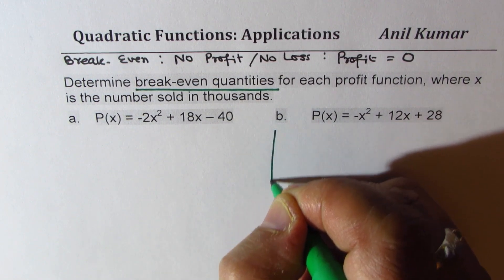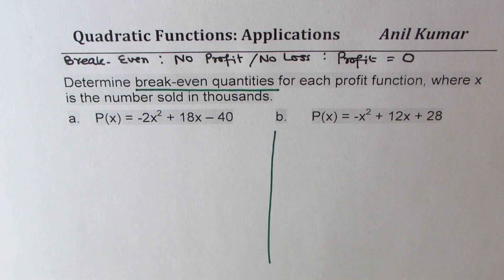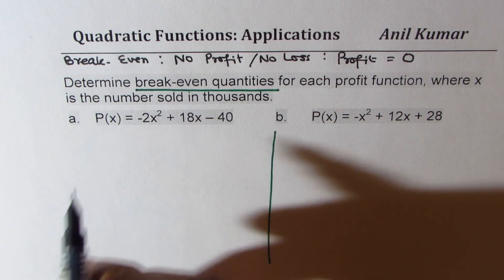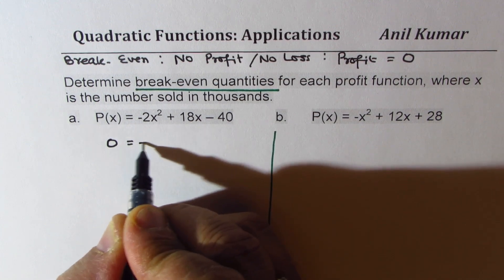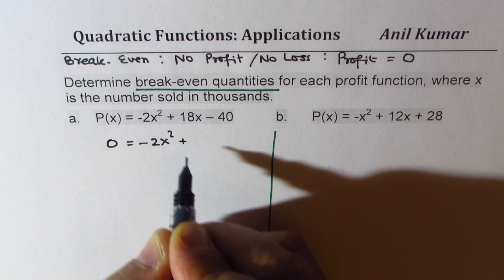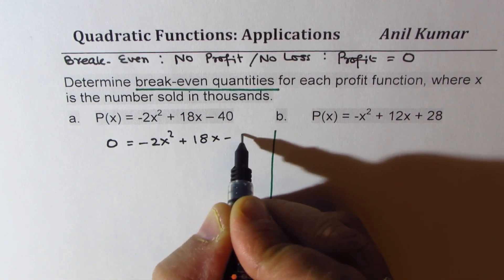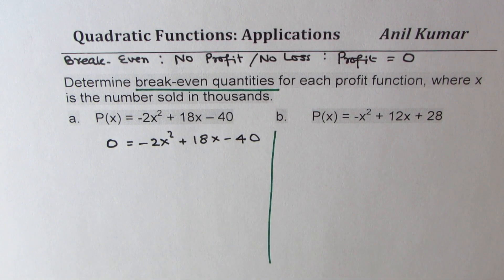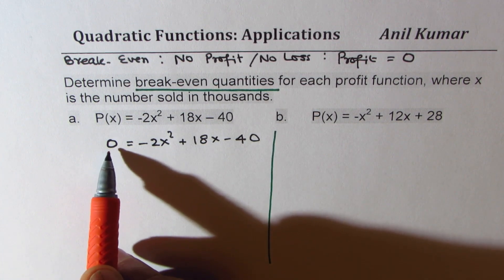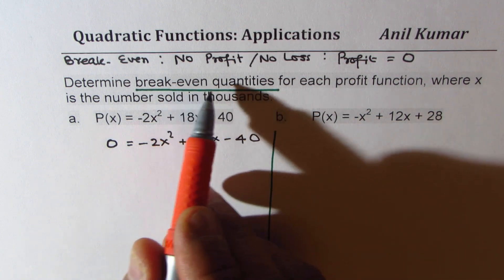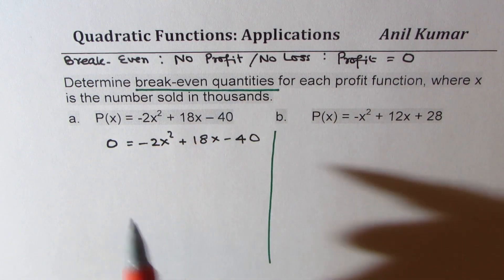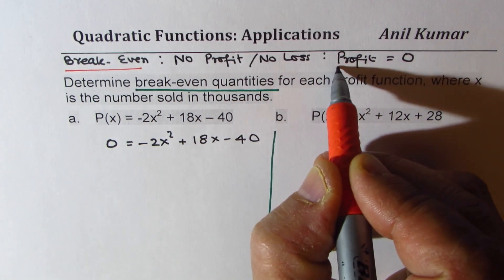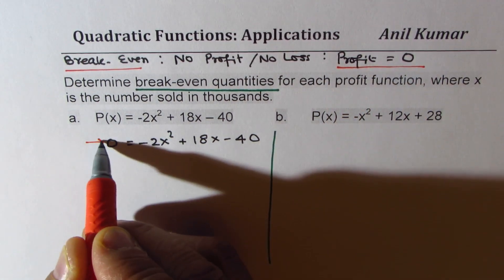Once you understand that, the question becomes very simple. It is finding roots of this equation. We have two profit functions. Let's begin with the very first one: 0 = -2x² + 18x - 40. You can pause the video and solve it yourself and then check my solution. Why did we put zero? Since we want break-even quantities, at break-even profit is zero, that is why we are substituting zero.